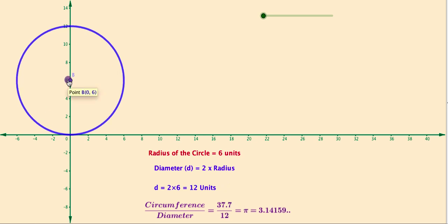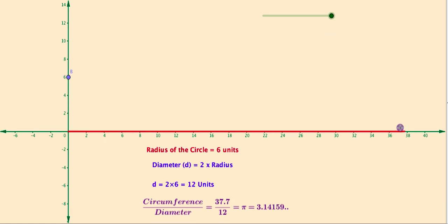Similarly, radius of the circle is 6 units. Now, the ratio of circumference to the diameter is 37.7 by 12, that is equal to 3.14159.